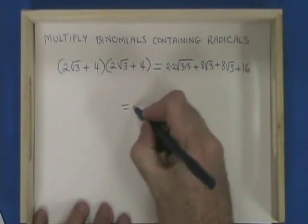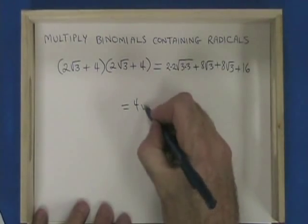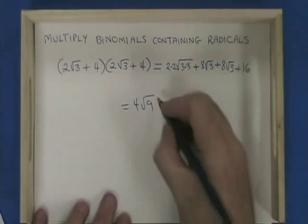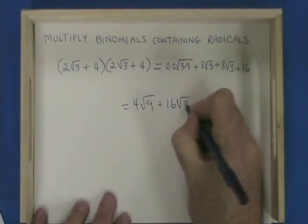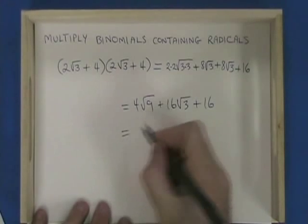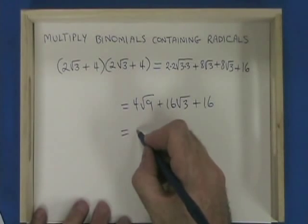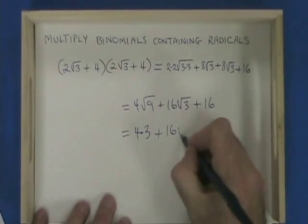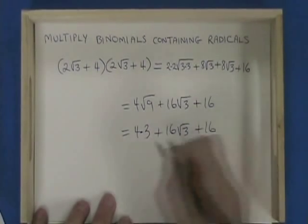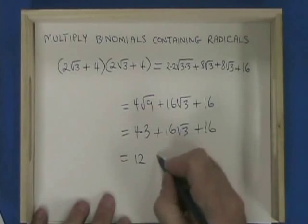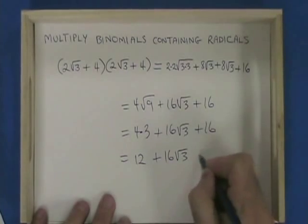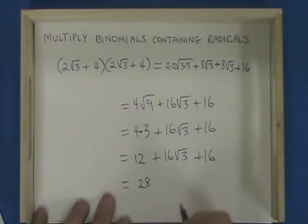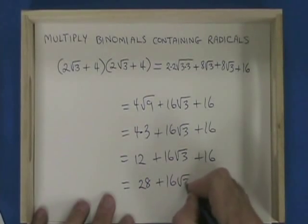2 times 2 is 4, and 3 times 3 is 9, so I have 4 root 9. Plus 8 root 3 plus 8 root 3 is plus 16 root 3, plus 16. The square root of 9 is 3, so I have 4 times 3 plus 16 root 3 plus 16. 4 times 3 is 12 plus 16 root 3 plus 16. And 12 plus 16 is 28, so I have 28 plus 16 root 3 as my final answer.